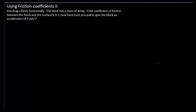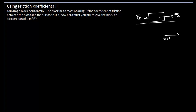We'll start by drawing a free body diagram — a block on some surface. The forces acting on the block: we have a pulling force, we have a force of friction that opposes this motion — we assume the motion is to the right — we have a normal force between the block and the surface pointing up, and we have a gravitational force between the earth and the block pointing down.